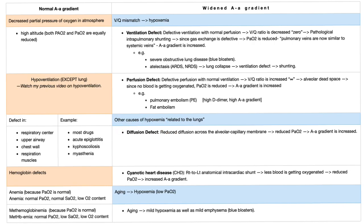VQ mismatch leads to hypoxemia — other causes of hypoxemia related to the lung, and aging also leads to hypoxemia. That's why the AA gradient widens as you grow older. In a ventilation defect, you cannot ventilate the lung, so the VQ ratio decreases and may even reach zero. This leads to pathological intrapulmonary shunting — not intracardiac, intrapulmonary. Gas exchange is defective, P(a)O2 is reduced, pulmonary veins become similar to systemic veins. That's why the AA gradient is increased.